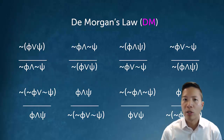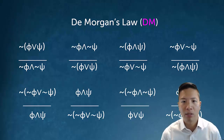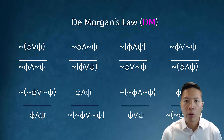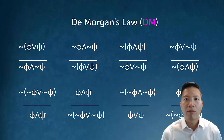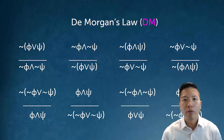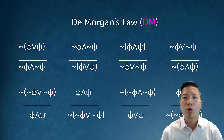Our last negation rule is DeMorgan's law, and DeMorgan's law has many different forms. I'm not going to go over all the forms — once we become comfortable with DeMorgan's, we can look at the different forms and figure them out. The forms just amount to shortcuts for dealing with negations, which I'm not going to worry about right now.